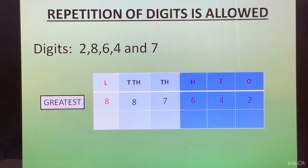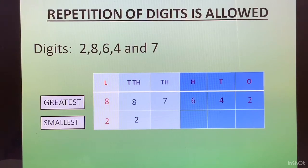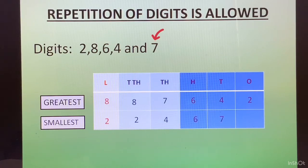For the smallest number, the smallest digit is 2. We start with 2, and since we need to repeat one digit to fill 6 places, we repeat 2 in the ten-thousands place as well. Then we fill the remaining places with 4, 6, and 7 in ascending order. This is how we form the greatest and smallest number where repetition is allowed.